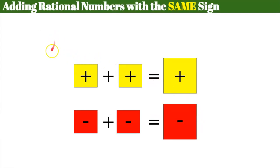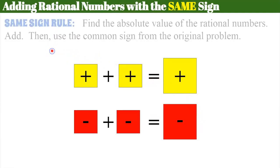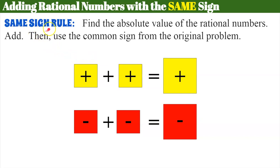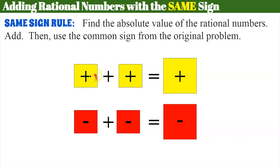First we're going to talk about adding rational numbers with the same sign. Just as we did with our integers, we are going to find the absolute value of the rational numbers, add, and then use the common sign from the original problem. I'm using squares here because the integer chips were round, so I want to identify that these are rational numbers. If I have a positive added to a positive, I get a larger positive.